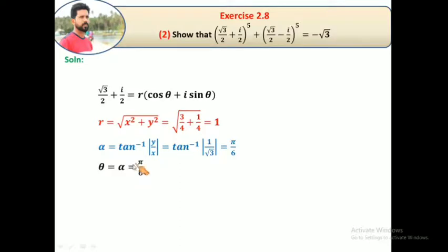So we substitute. √3/2 + i/2 equals r equals 1, so 1 times cos θ, θ is π/6, cos(π/6) plus i sin(π/6).